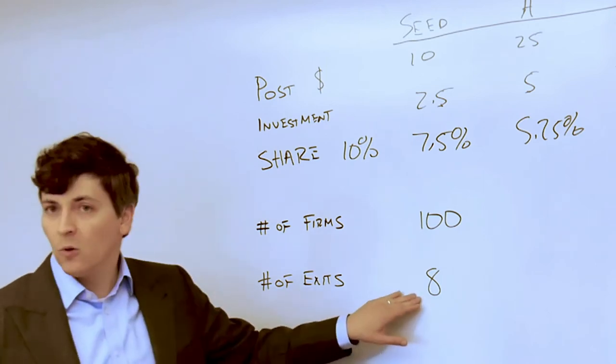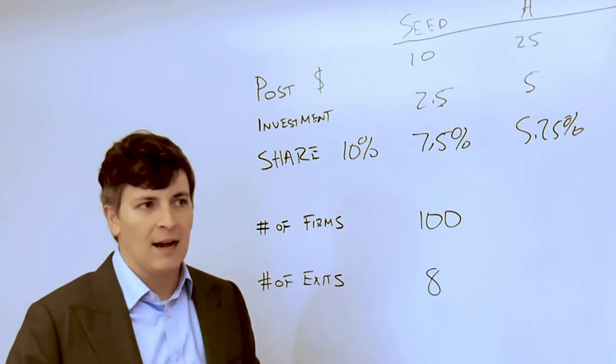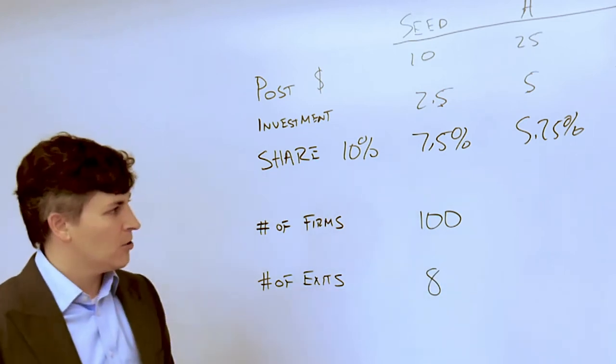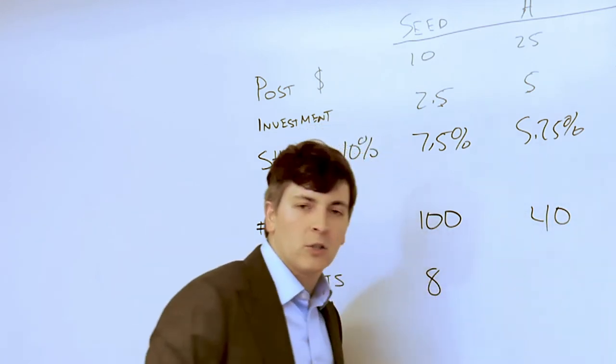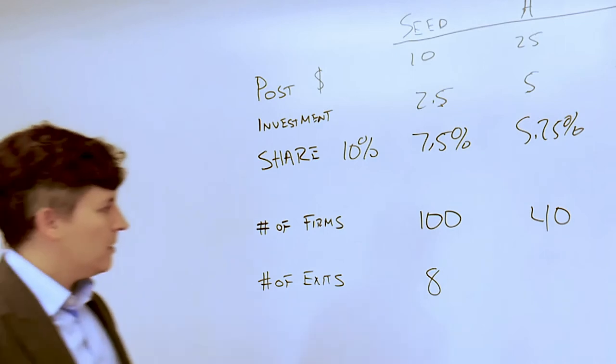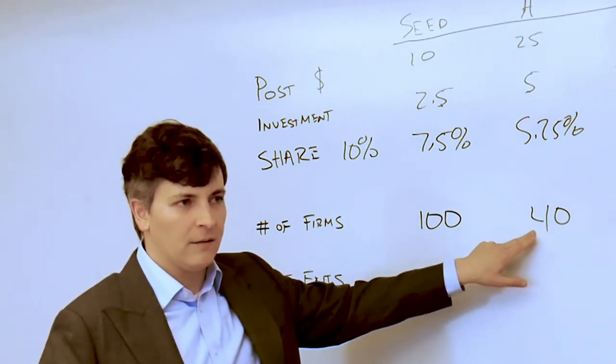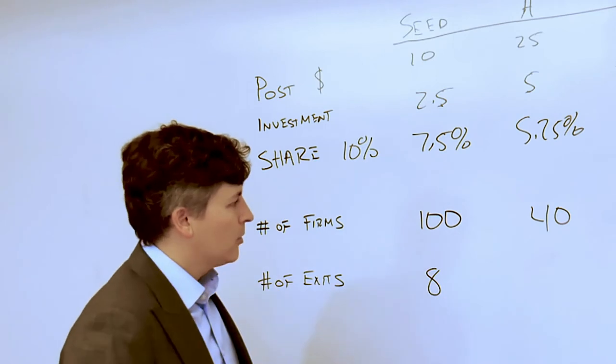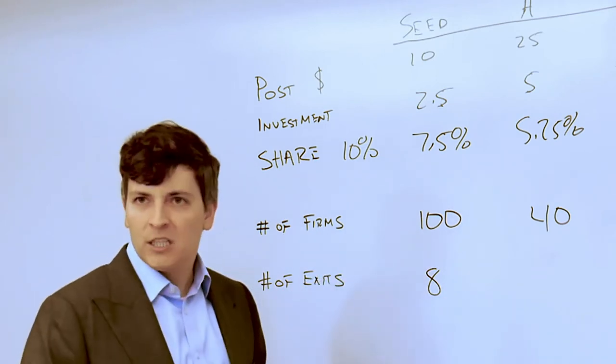Many of the firms at this stage are also going to end up failing without receiving future capital from Series A investors. In our data, about 40 firms are going to go on to receive Series A investment, which means that 8 firms have exited, 40 firms go on to get future investment, and so over half of the firms here have failed at the seed round.